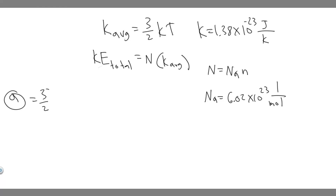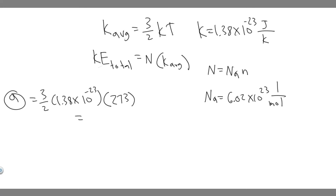So we calculate 3/2 times K, which is 1.38 times 10 to the minus 23, multiplied by T which is 273 K. Make sure you use Kelvin when you solve it. So 1.5 times 1.38 times 10 to the minus 23 times 273 gives you 5.65 times 10 to the minus 21 joules. That's your answer to part A.